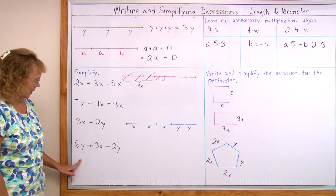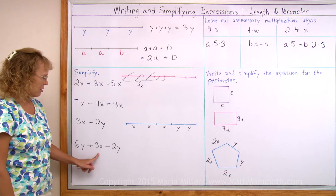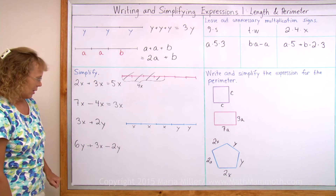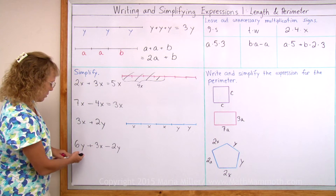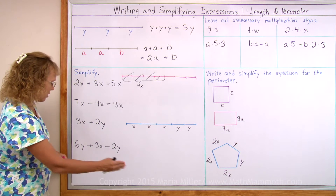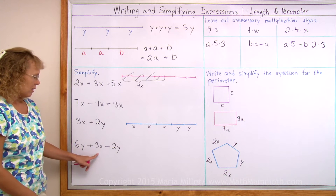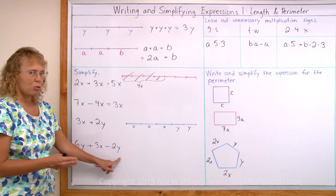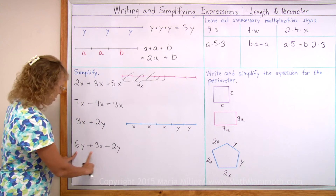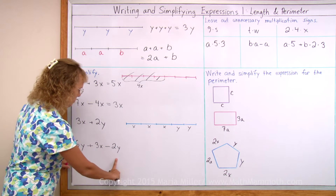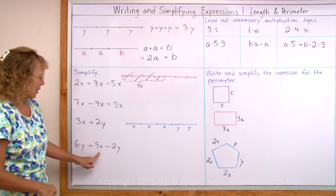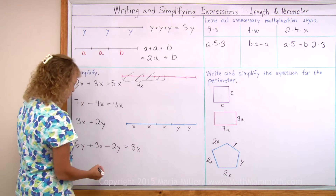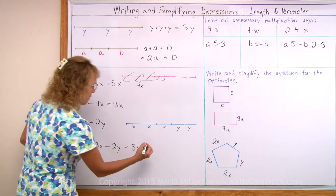How about the last one? 6y plus 3x minus 2y. If you think of lengths, there are lengths of y and 6 of them, lengths of x and 3 of them, and then you take away 2 lengths of y. So you can do the subtraction: 6y minus 2y. You can do that — that leaves you 4y. The 3x does not change. So we still have 3x, and from the y terms we have 4y left.